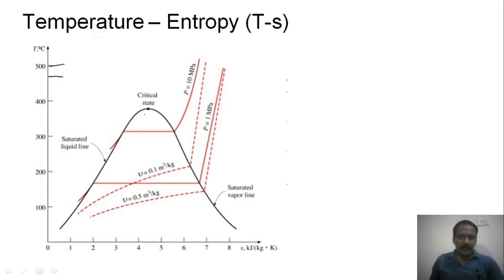The dryness fraction lines inside the dome are like this. Near the saturated liquid line the dryness fraction is very low, like x = 0.1, and near the saturated vapor line the dryness fraction is x = 0.9.